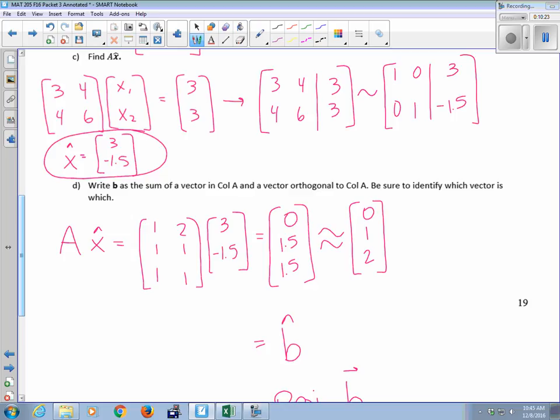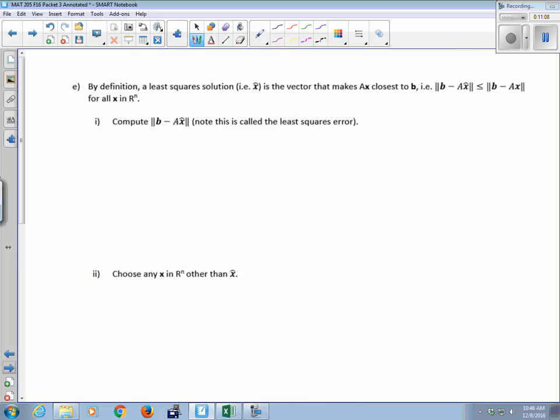When you're asked to find the least squares solution. Nope. Nope. X hat. But this thing is called the least squares solution. All right. The word solution to me is the thing that gives the hint of which of these vectors they're asking for. Because if they just said solve AX equals B, like the solution to AX equals B is an X. So if they ask for the least squares solution, it's the X, the X hat in this case.